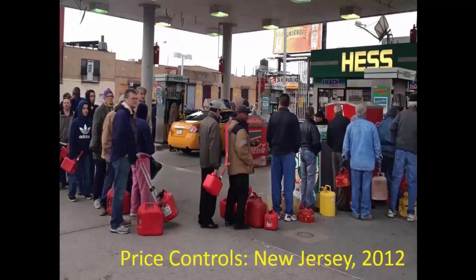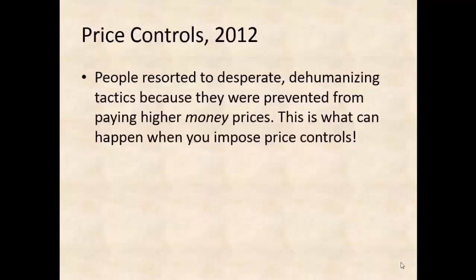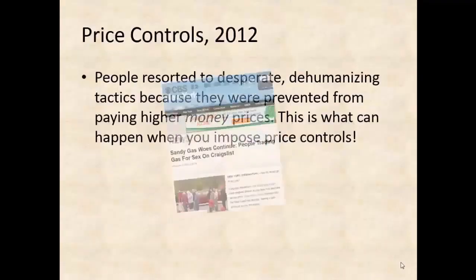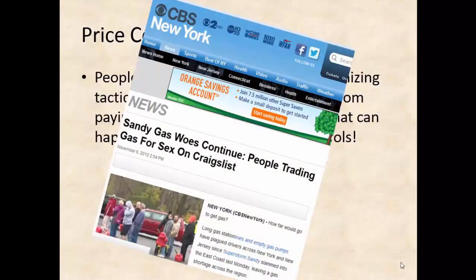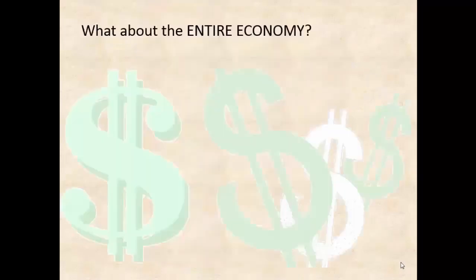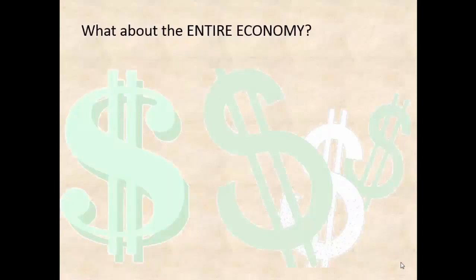That caused a lot of needless pain and suffering: waiting in line, and people reverting to desperate measures, using means other than money to purchase a highly needed commodity. If you can't pay higher money prices, people will find other ways to pay, including dehumanizing and undignified means. So we need to respect the equilibrium price, even if it is higher than we'd want, because it reflects the truth about the actual scarcity of a good relative to its value, and it tells you exactly what you need to pay if you want to access the good.